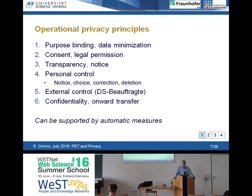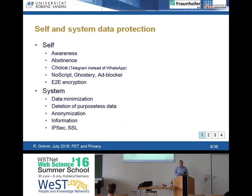These are six principles and you will find them in every basic article about privacy. They express legal concerns, and they can be supported by automatic measures with information technology. We separate these technological or organizational supports of privacy into two important areas: self-protection and system protection. Self-protection means users can protect themselves with mechanisms they hold in their own hands.